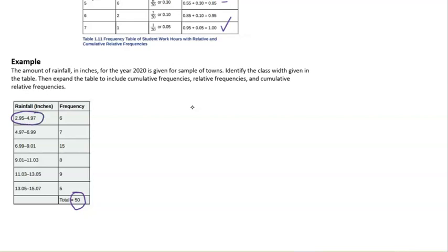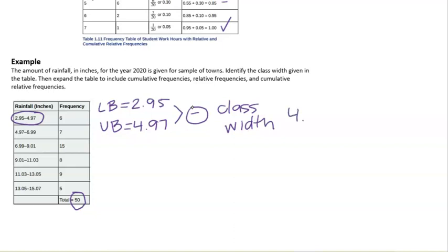Where in this case, we have a range of rainfall values here. So you can find your class width by taking what's called the lower bound of each interval, so that smaller number, and the upper bound of the interval. And then if you just subtract those or find the difference of those, then you'll find the class width. So 4.97 minus 2.95 gives us 2.02 inches for our class width.